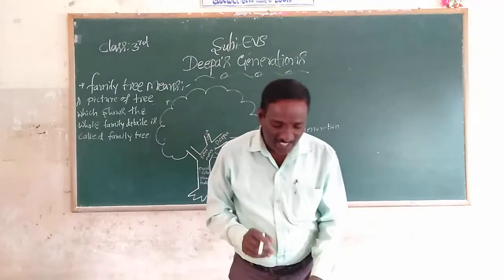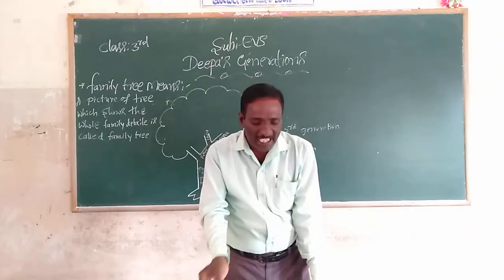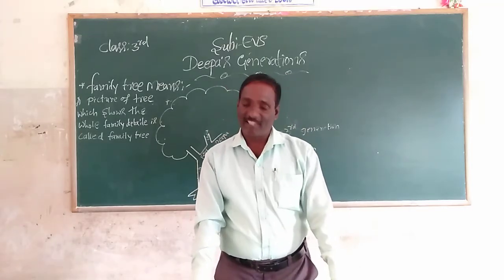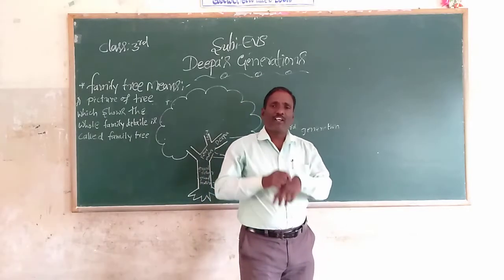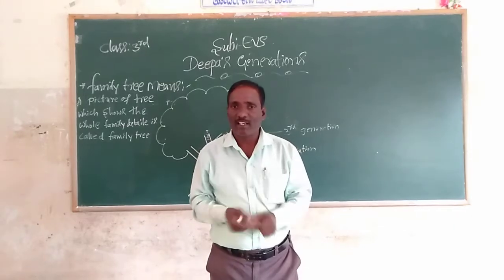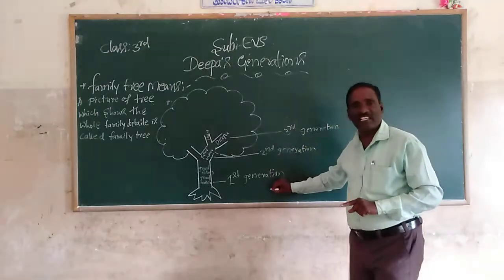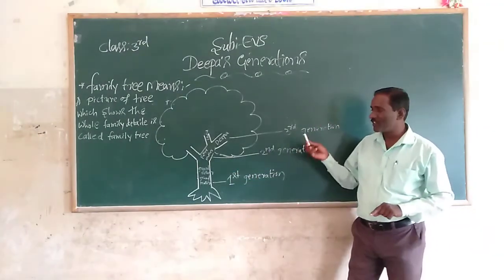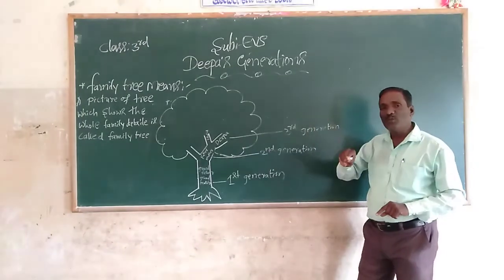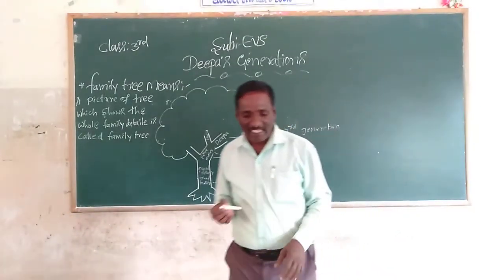Your colour of skin and your father's skin is the same. Your colour of face and your father's face is the same — it is called generation. First generation is grandfather, second generation is father and mother, third generation is you and your sisters and brothers. It is called a family tree.